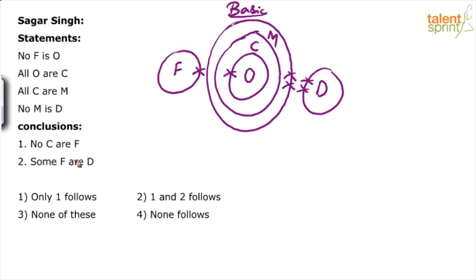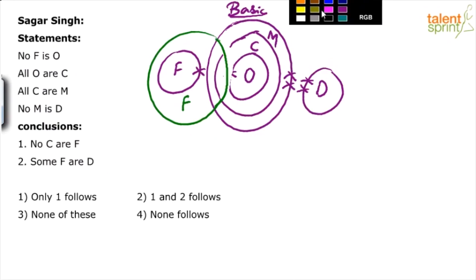A simple understanding here is that F cannot touch O. But in possible diagrams, we can make F overlap with C and M. For example, let's assume that we draw F in this way. I think it is just touching O there, so let me redraw it so that we don't get confused. Let's say this is the diagram for F, and here's the diagram for O like we had seen earlier.